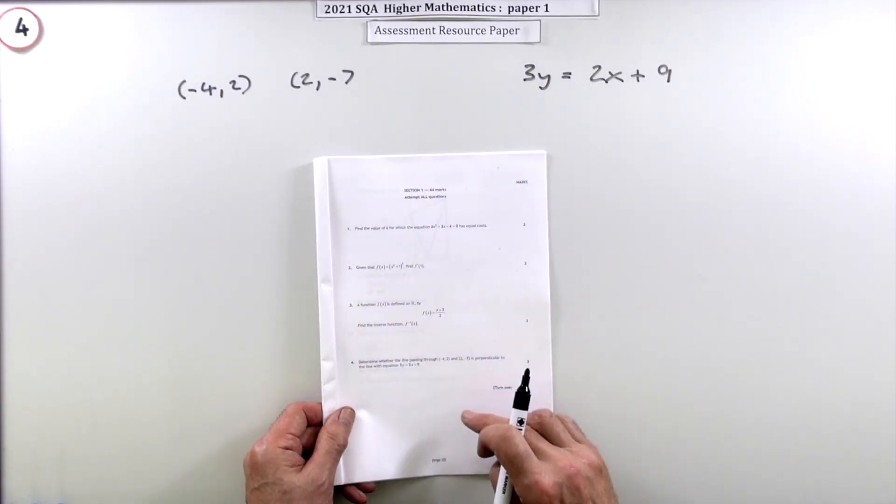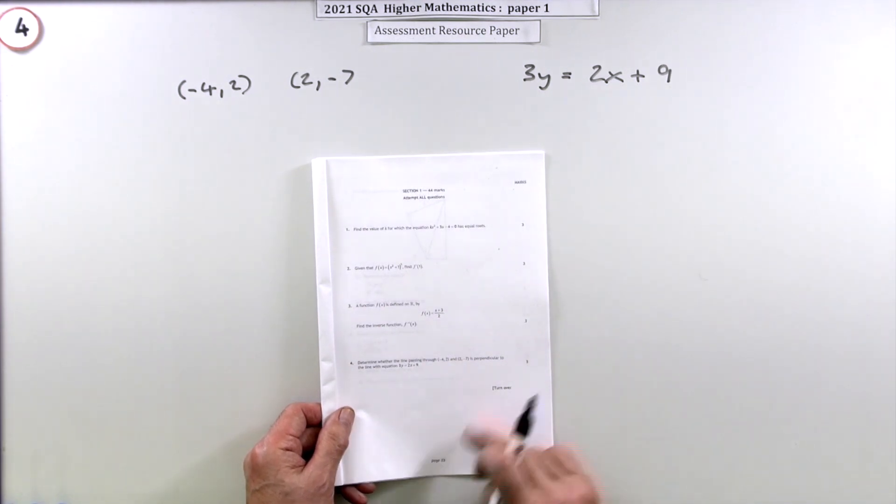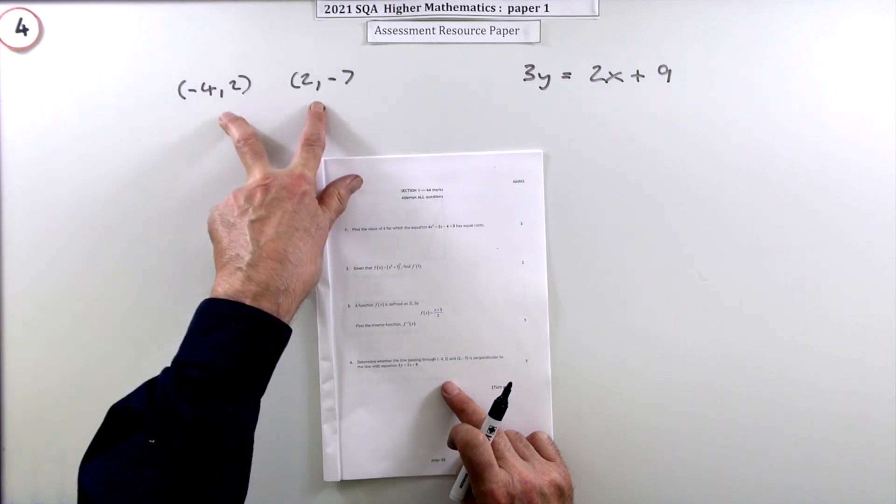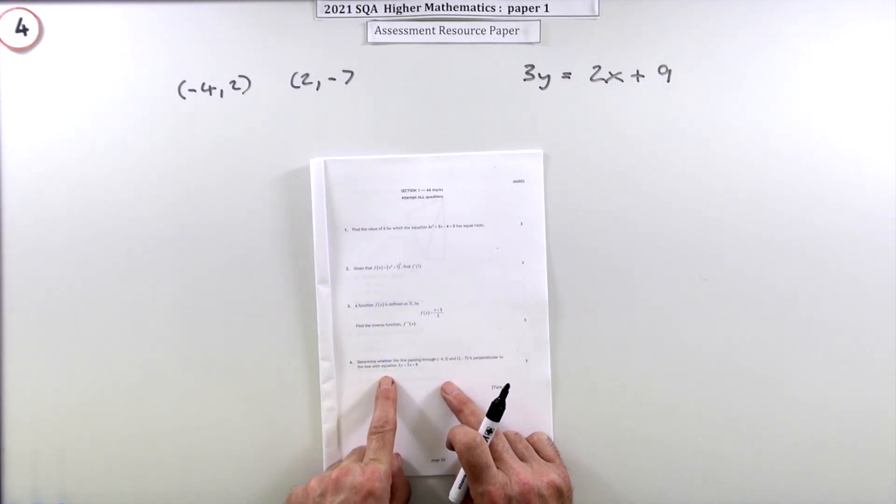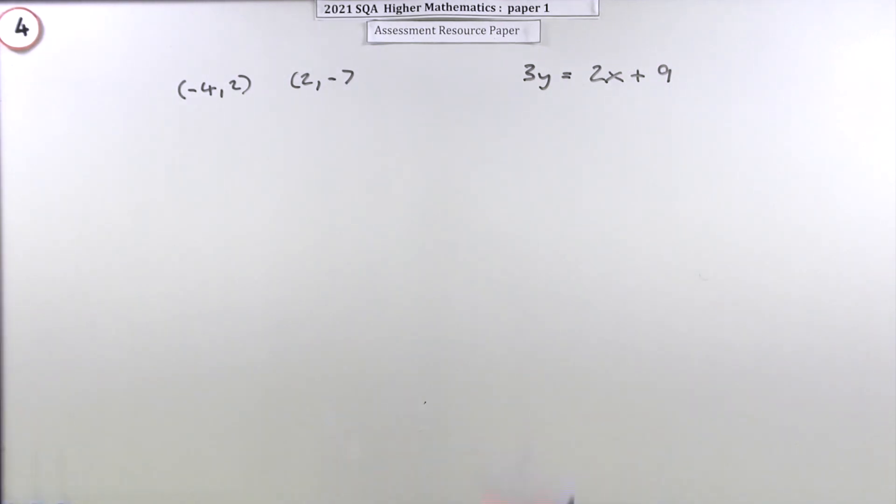Number four from paper one of the 2021 Higher Maths resource paper. Three marks: determine whether the line passing through these two points is perpendicular to the line with this equation.